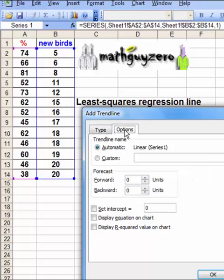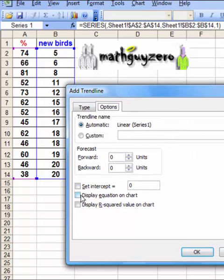These are all linear. Click the options. You're going to click the display equation on chart box and the box that puts in R squared.